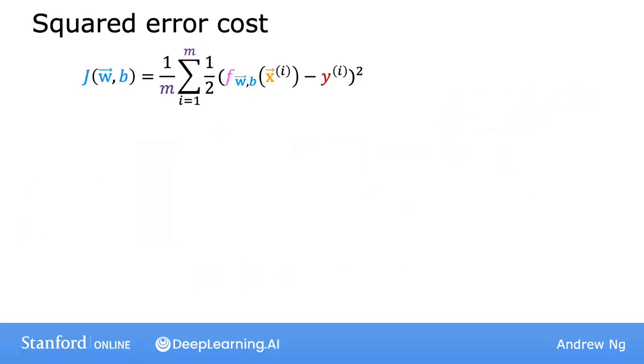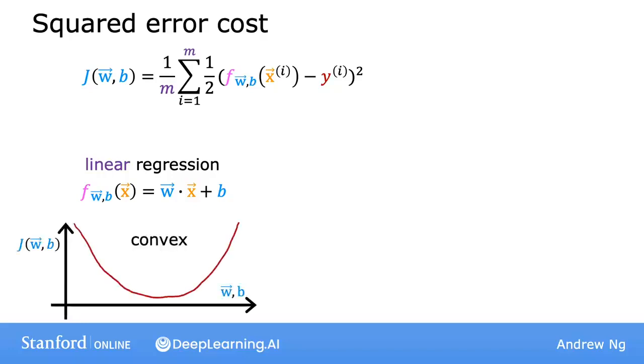Recall for linear regression, this is the squared error cost function. The only thing I've changed is that I put the one-half inside the summation instead of outside the summation. And you might remember that in the case of linear regression, where f of x is the linear function w dot x plus b, the cost function looks like this is a convex function or a bow shape or a hammer shape.